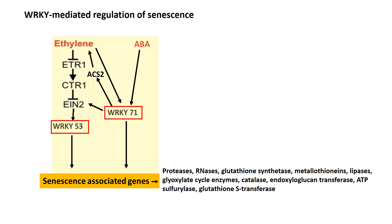Another WRKY transcription factor, WRKY71, hastens leaf senescence by directly activating the aminocyclopropane carboxylate synthase gene ACS2, leading to an increase in ethylene levels. It also upregulates the ethylene signaling pathway gene EIN2 to accelerate leaf senescence. In turn, the expression of WRKY71 is upregulated by ethylene, thus forming a feed-forward loop.